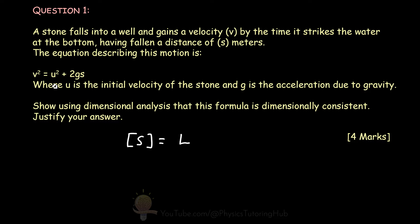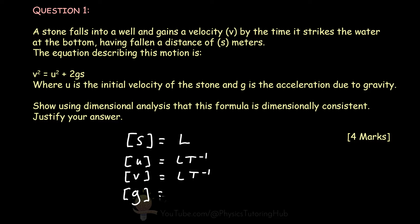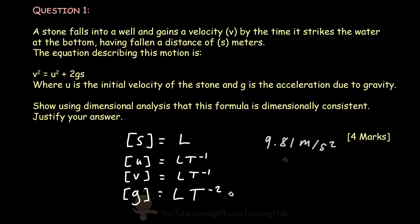U and V are the initial velocity and the final velocity of the stone. Velocity has dimensions of length over time. And lastly, we have the acceleration due to gravity, which is simply an acceleration. We normally see it as 9.81 metres per second squared. So from the units, we can see that our acceleration has dimensions of length over time squared, which we can represent as length times time to the minus two. Representing our dimensions this way for all variables in our equation gives us our first mark.